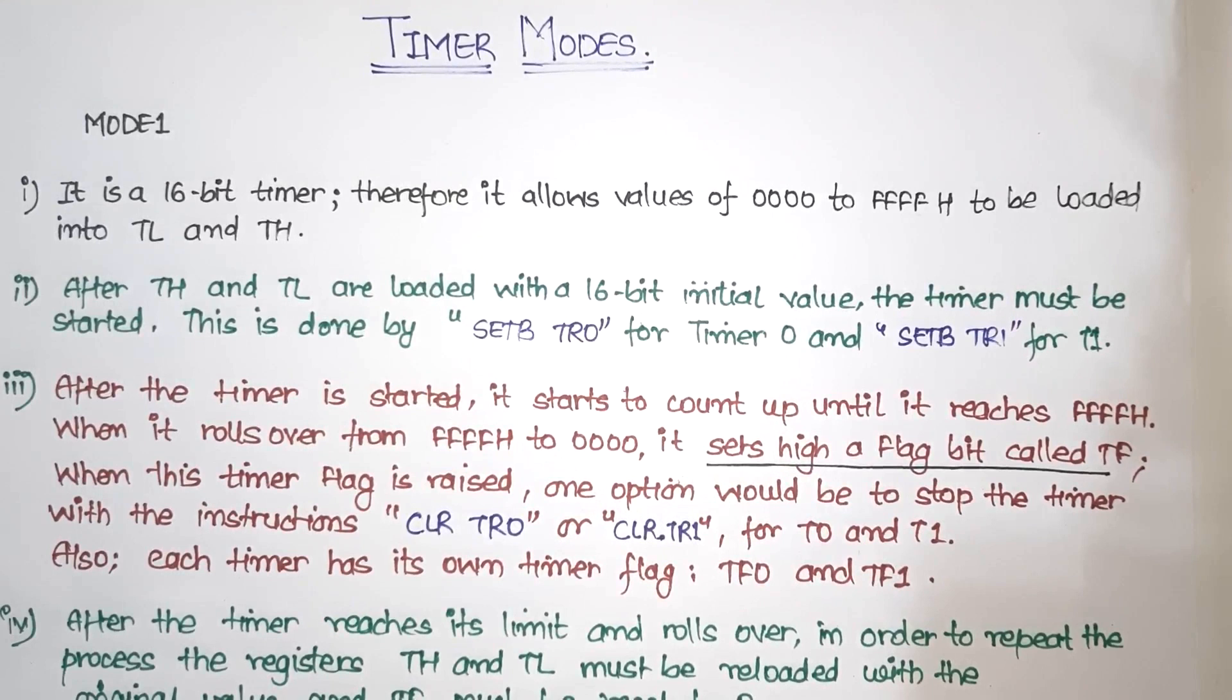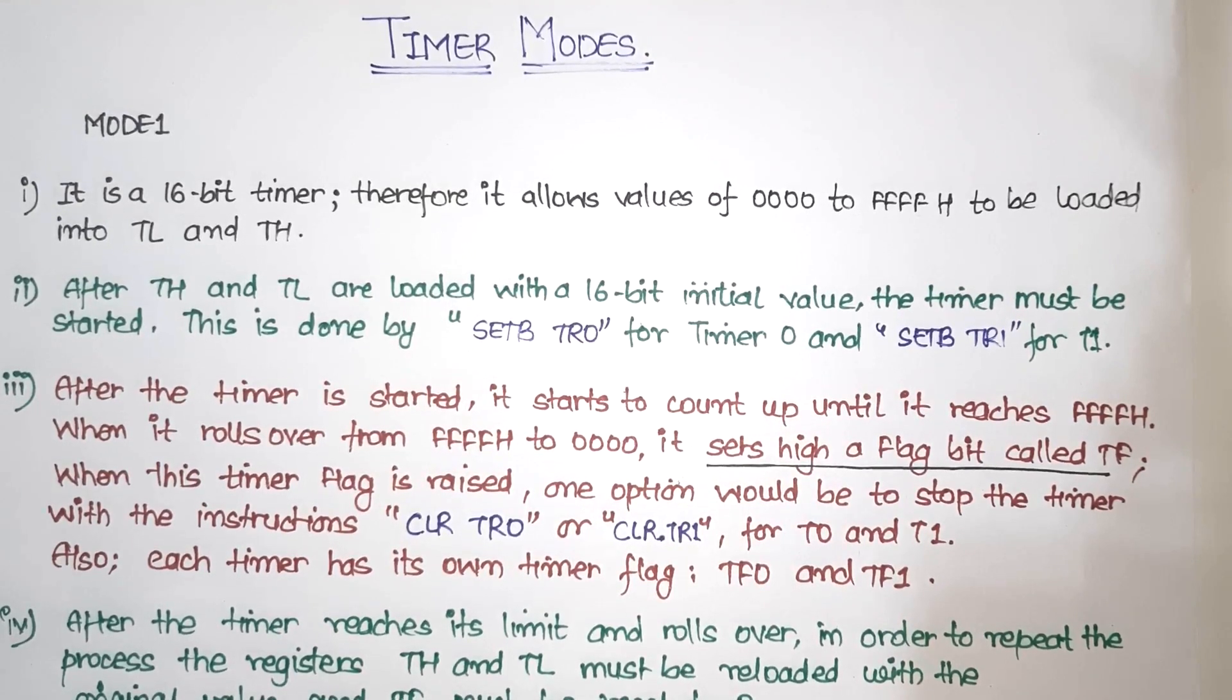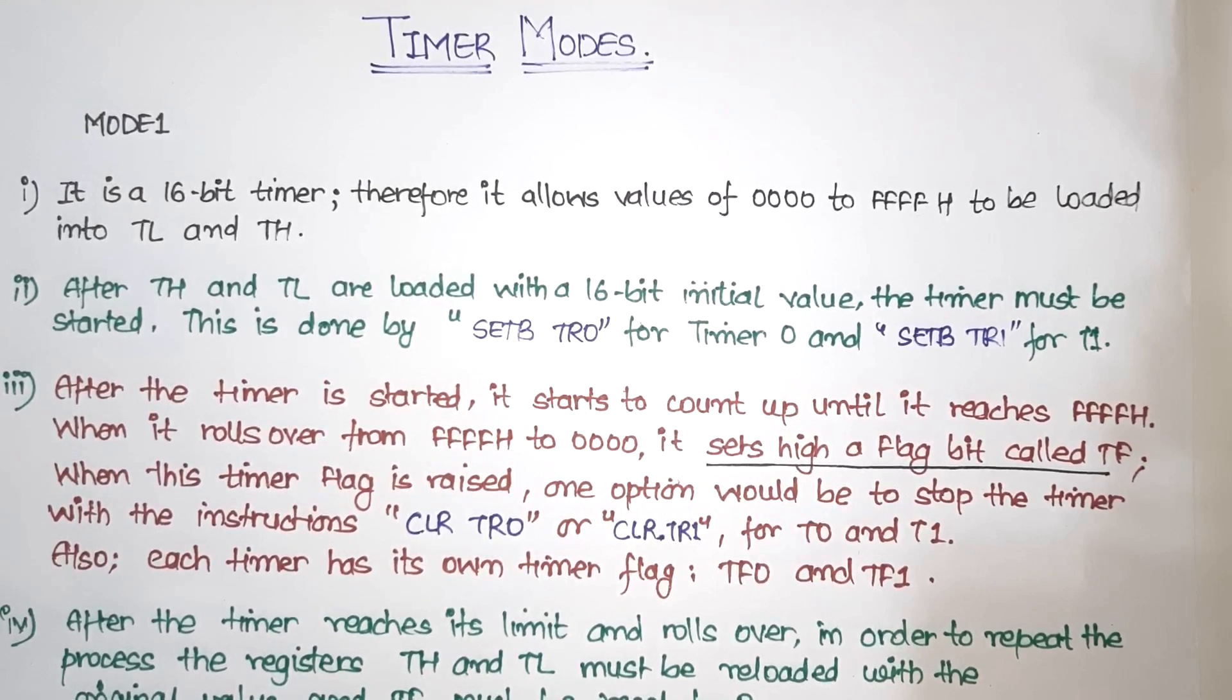We have already seen the introduction of Timer, so we have seen 4 modes: Mode 0, Mode 1, Mode 2, and Mode 3. Out of which 3 are very important, that is Mode 0, 1, and 2. So let us start with Mode 1 first.